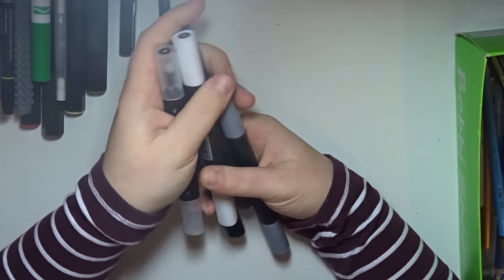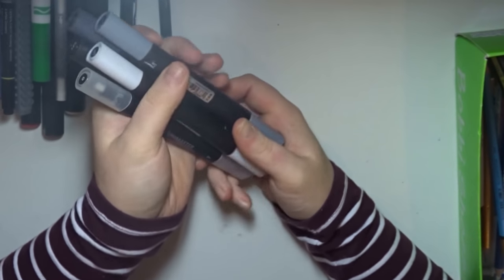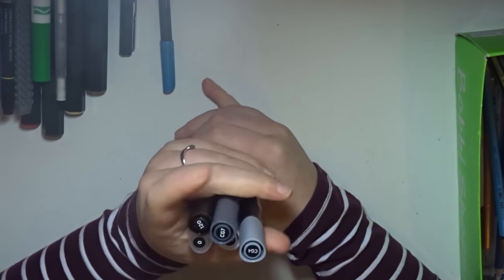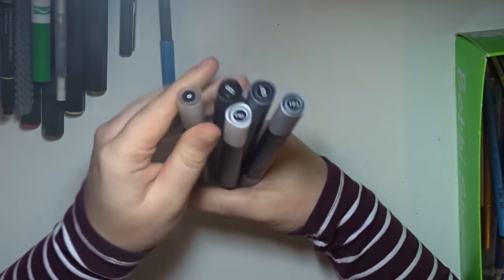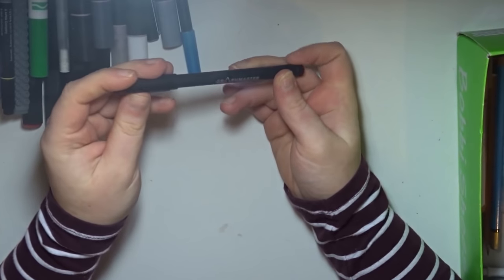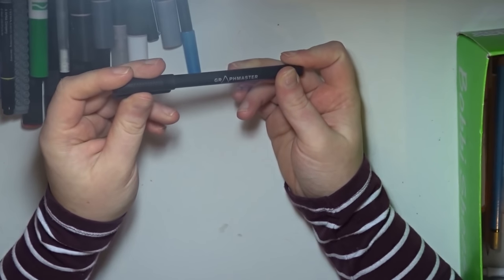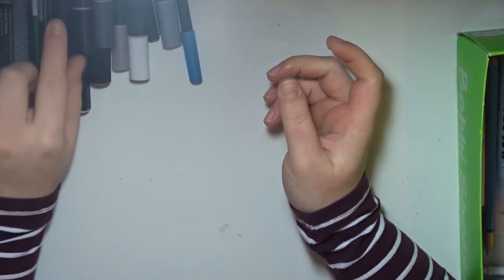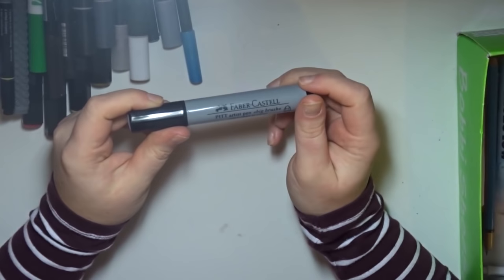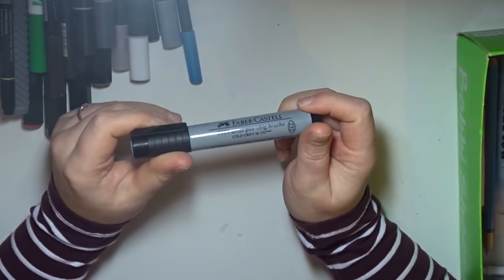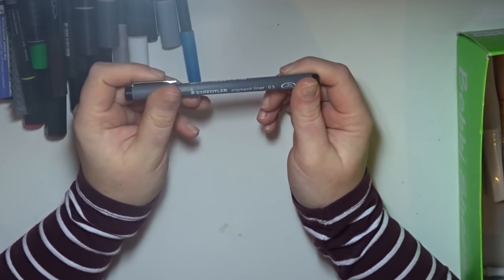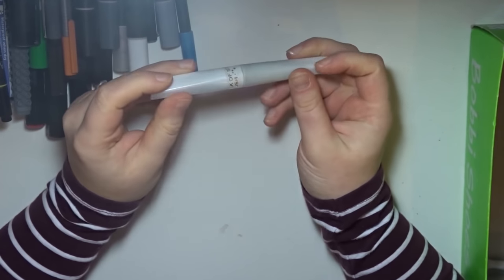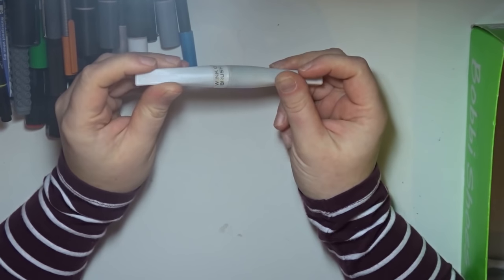These graphmaster twin tip dual tip alcohol based markers in grey tones and a blender, a couple of graphmaster liners. Another Lyra aqua brush jewel, a Faber-Castell Pitt artist pen big brush in cold grey, a Staedtler pigment liner in 0.5, a Staedtler tripod fineliner.